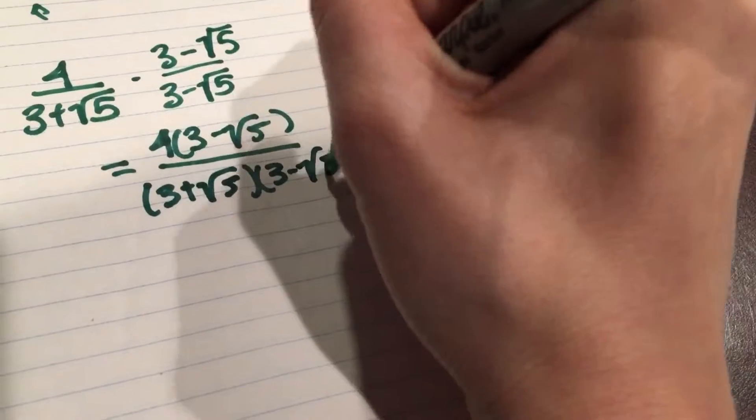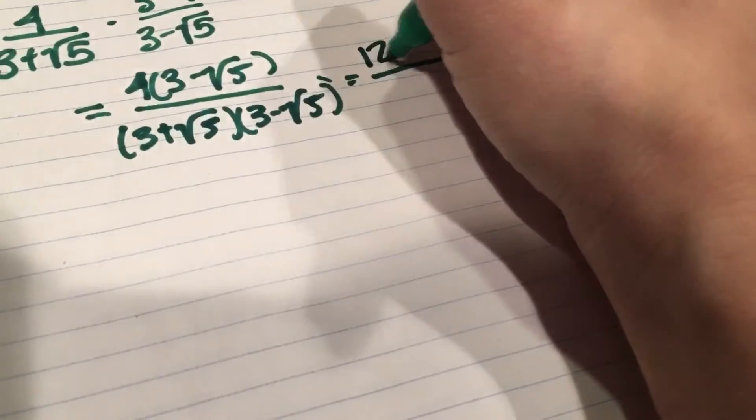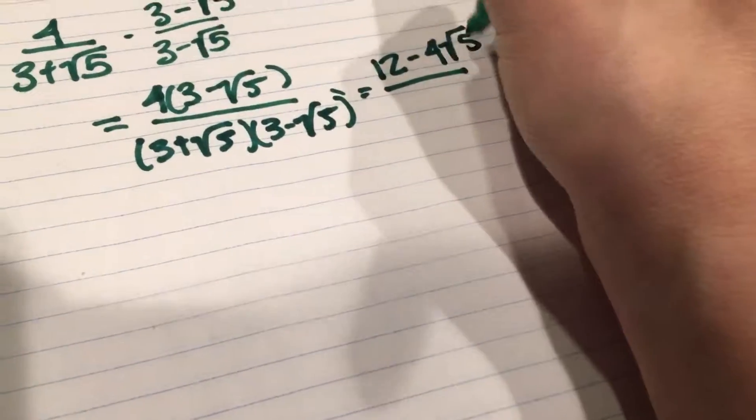So you just multiply 4 times 3 minus square root of 5, and you do 3 plus square root of 5 times 3 minus square root of 5. For the top you just distribute: 12 minus 4 radical 5.